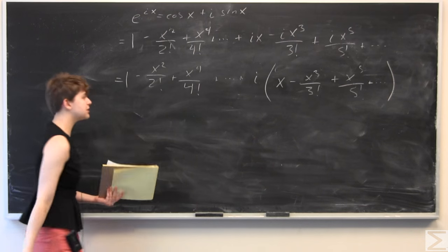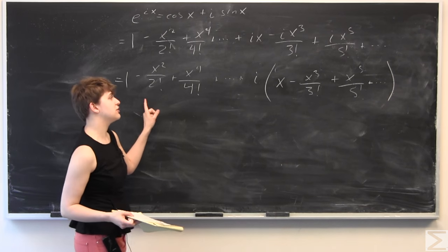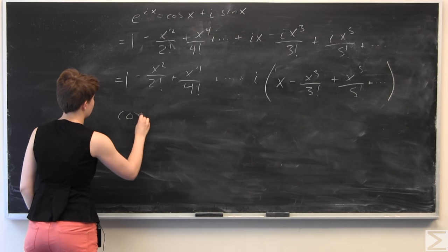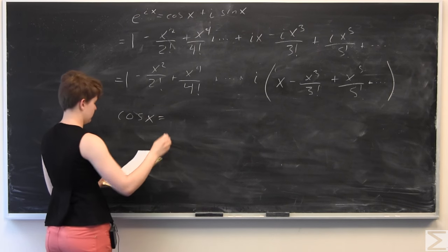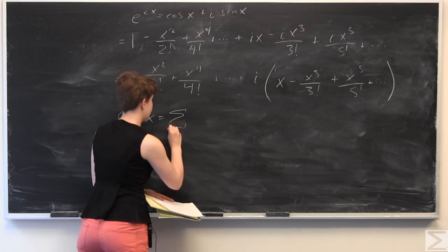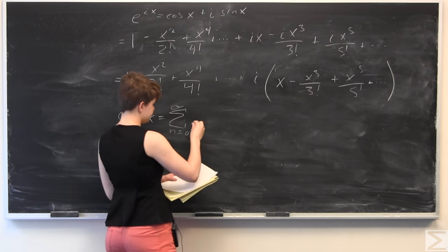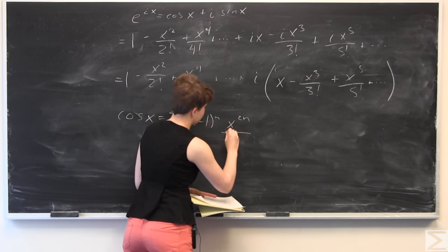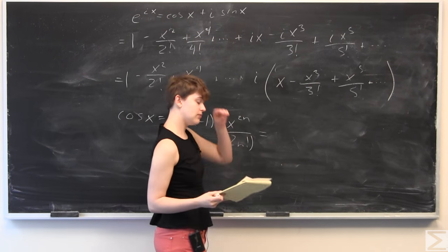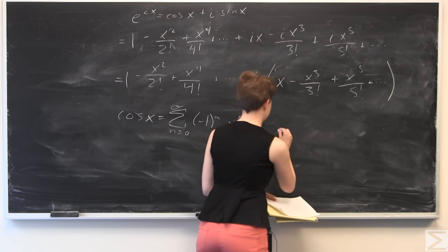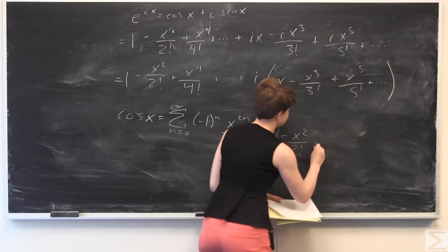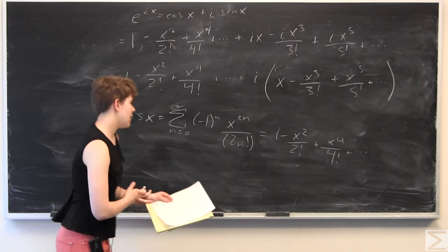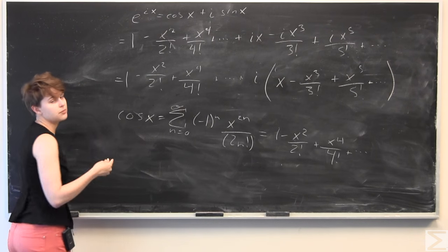We've essentially finished — notice that the first group is the MacLaurin expansion for cosine. Specifically, cosine of x equals the sum from n equals 0 to infinity of negative 1 to the n times x to the 2n over 2n factorial, which equals 1 minus x squared over 2 factorial plus x to the fourth over 4 factorial, and so on.